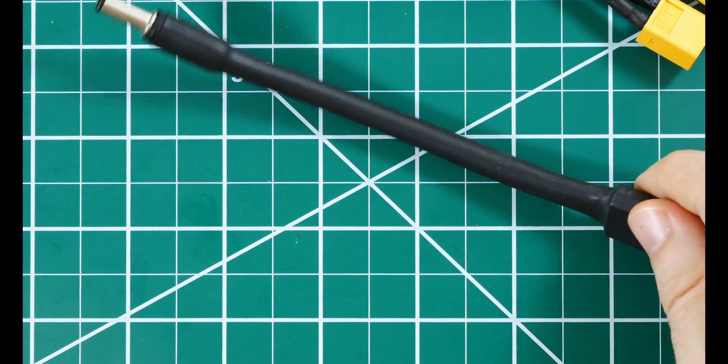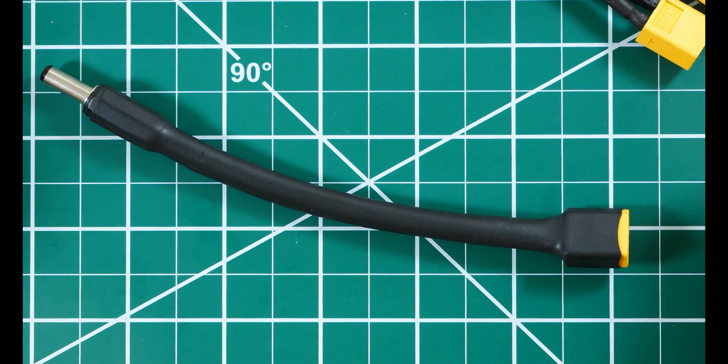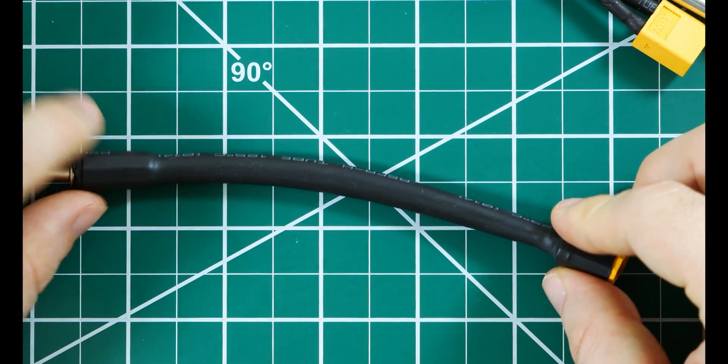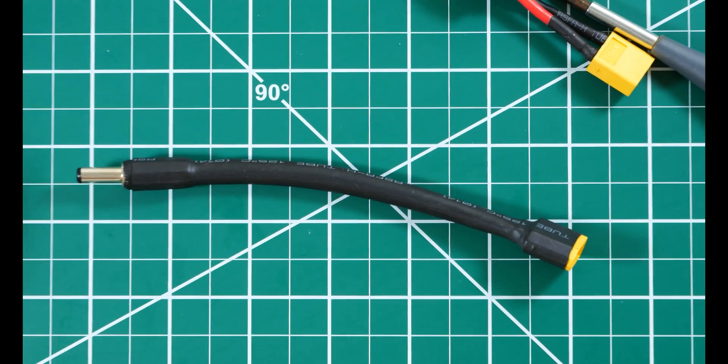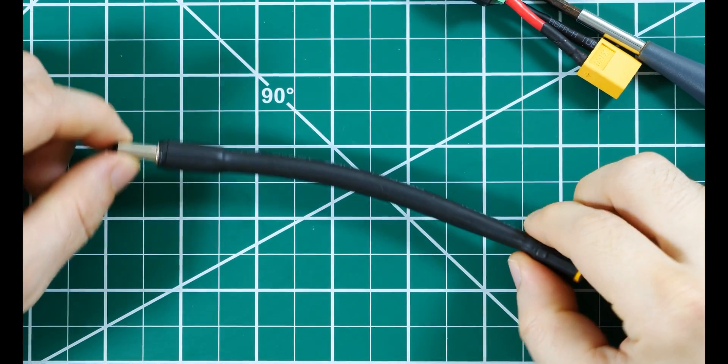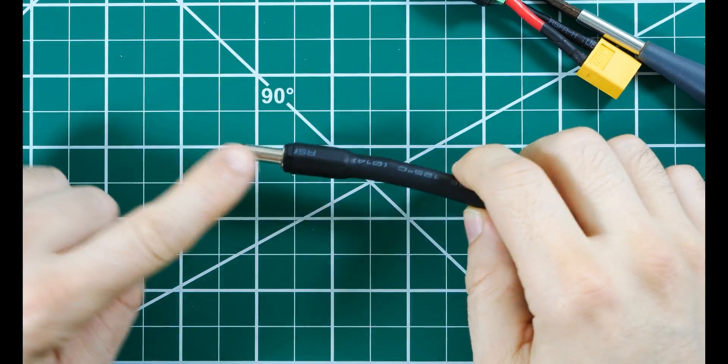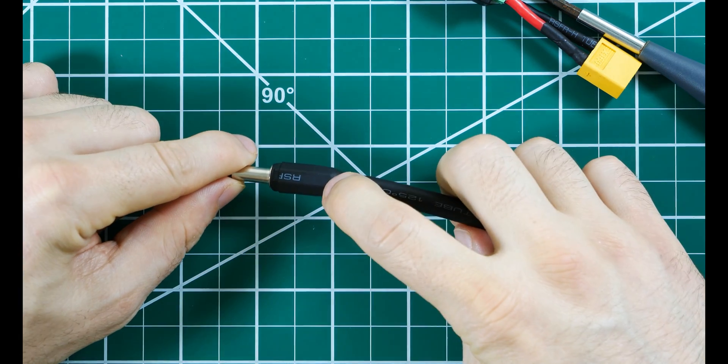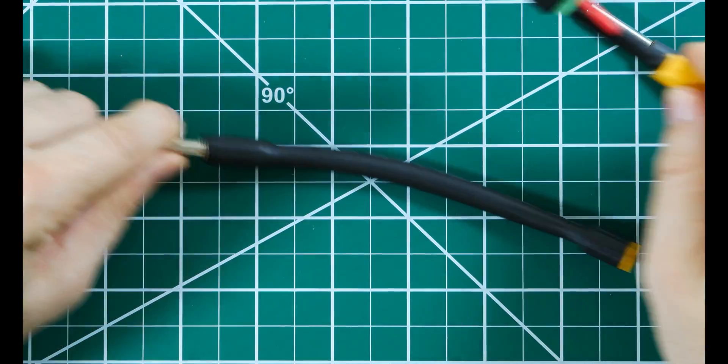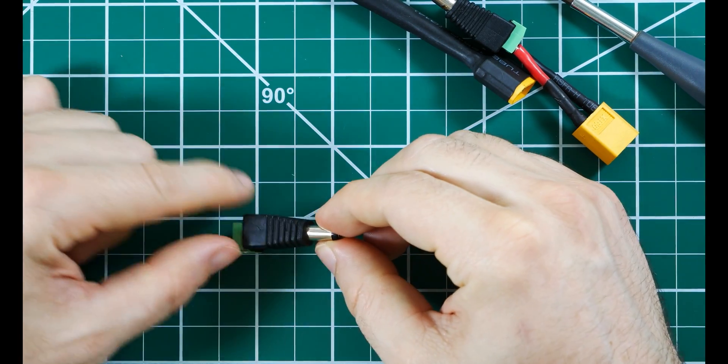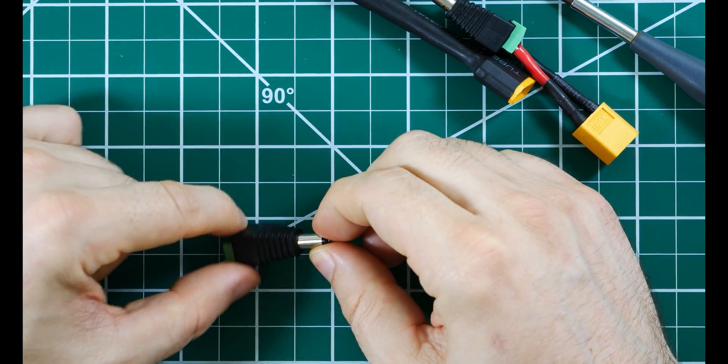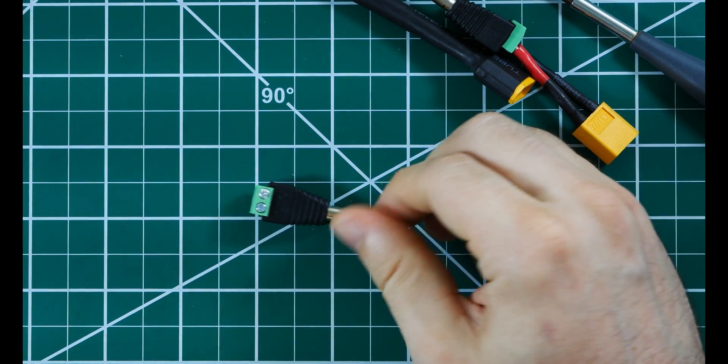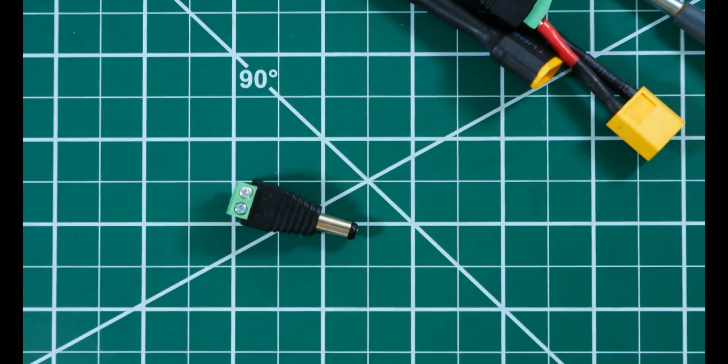This was the original design, basically the de facto standard for XT 60 to barrel. You just have a single piece of shrink and a barrel on the end. The problem with this is that you would see these tips break off either right at the point where the metal meets the plastic or where the plastic meets the wiring. With this new version you don't really have that problem because this is constructed in a much higher quality way.